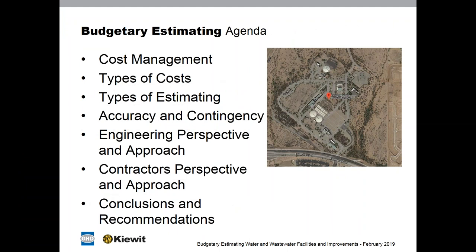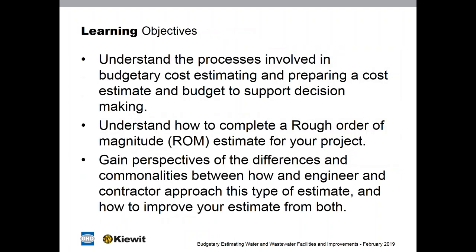Here's what we're going to cover today: cost management, different types of costs, and estimating. We'll have a discussion on accuracy and contingency, then jump into the engineering perspective, followed by the contractor's perspective, and ultimately some conclusions and recommendations. The learning objectives are: first, understand the processes involved in budgetary estimating to help prepare a cost estimate and budget to support decision making; second, how to complete a rough order of magnitude estimate; and third, to gain perspectives on the differences and commonalities between engineers and contractors in their approach to estimating.